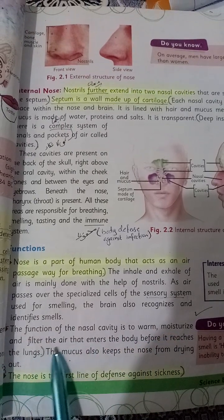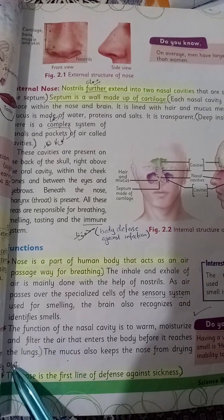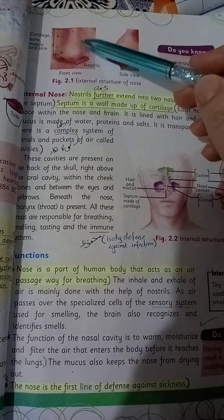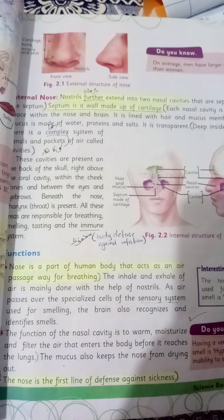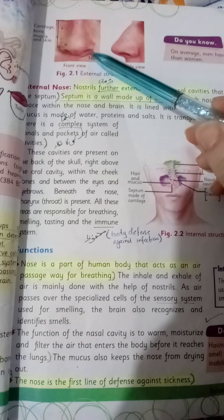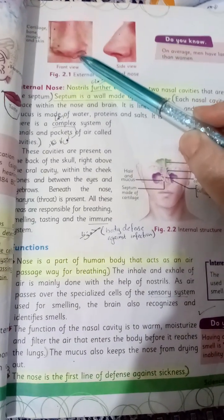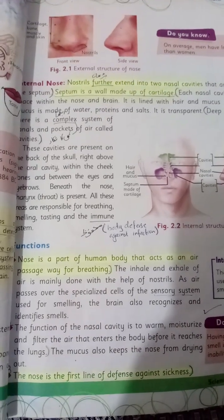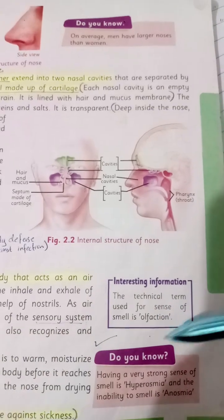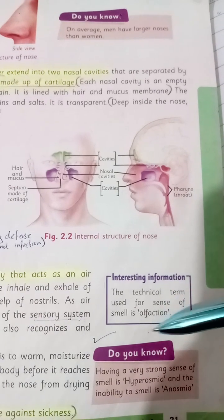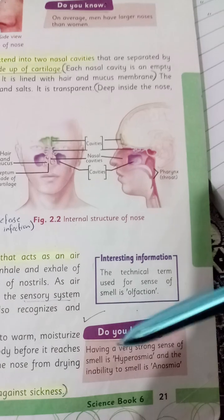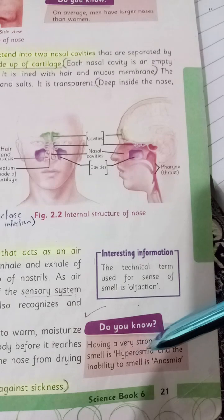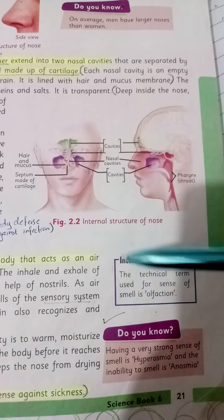The second function of the nasal cavity is to warm, moisturize, and filter the air that enters the body before it reaches the lungs. The nose is the first line of defense against disease — covering the nose in dusty or polluted environments is best for avoiding illness. The technical term for the sense of smell is olfaction. Having a very strong sense of smell is called hyperosmia, and inability to smell is called anosmia. These are important terms — they may appear in fill-in-the-blank questions.